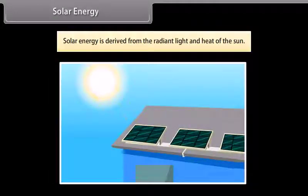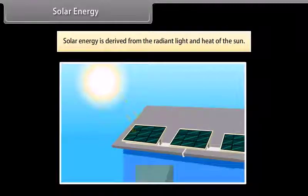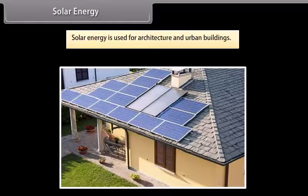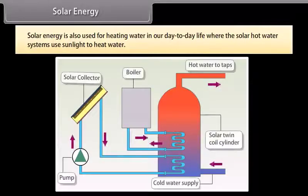Solar energy. Solar energy is derived from the radiant light and heat of the sun. It has been used by humans since ancient times for a range of technologies. Solar energy is used for architecture and urban buildings. Solar energy is also used for heating water in our day-to-day life, where the solar hot water systems use sunlight to heat water. In low geographical latitudes, the domestic hot water usage is provided for with temperatures up to 60 degrees Celsius by solar heating systems. The most common types of solar water heaters are evacuated tube collectors and glazed flat plate collectors, generally used for domestic hot water, and unglazed plastic collectors used mainly to heat swimming pools.